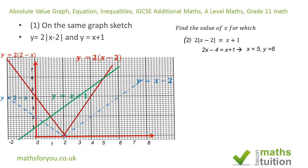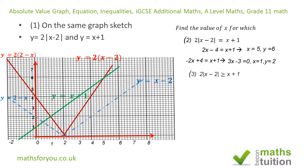For the second equation, 4 minus 2X equals X plus 1, we have X equals 1 and Y equals 2. Because the expression is positive, the value X equals 1 is valid.